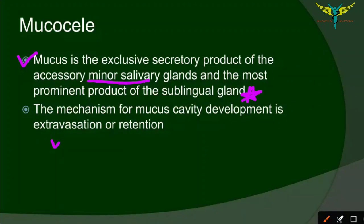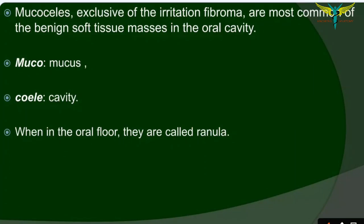The mechanism of mucocele development is by extravasation of mucus or retention of mucus. Mucoceles are mostly caused due to irritation and are the most common type of benign soft tissue masses in the oral cavity. 'Muco' meaning mucus and 'cele' meaning cavity.